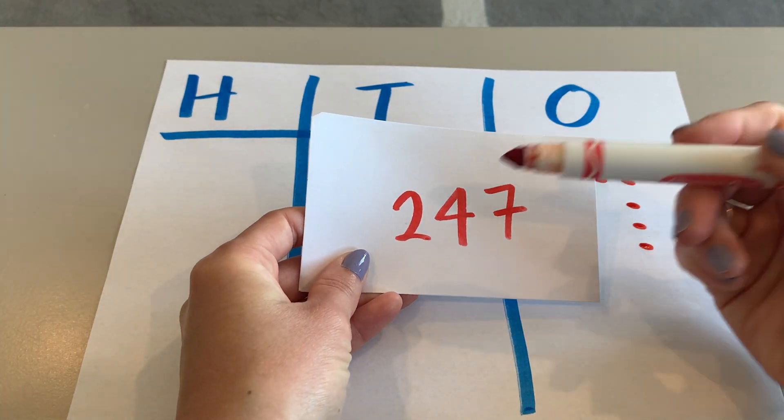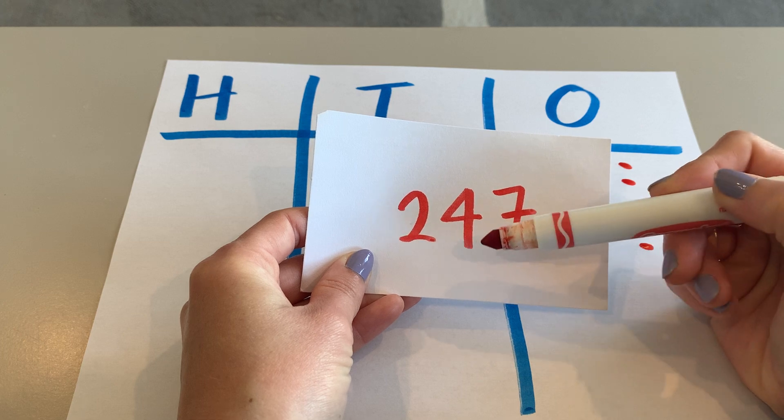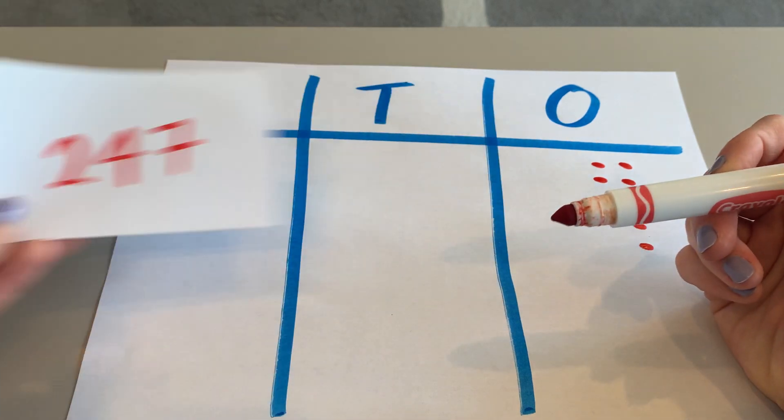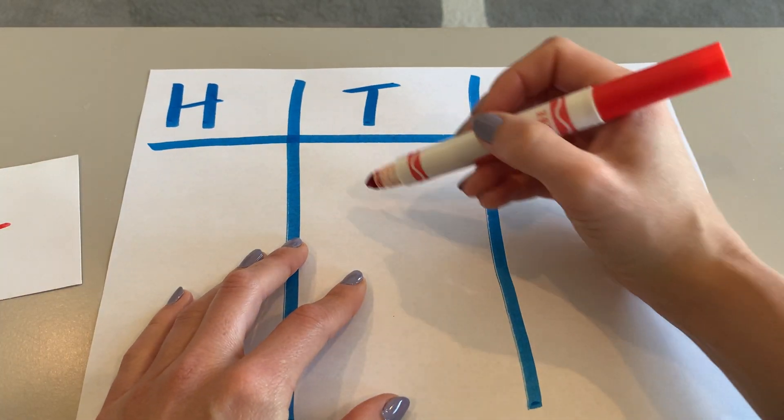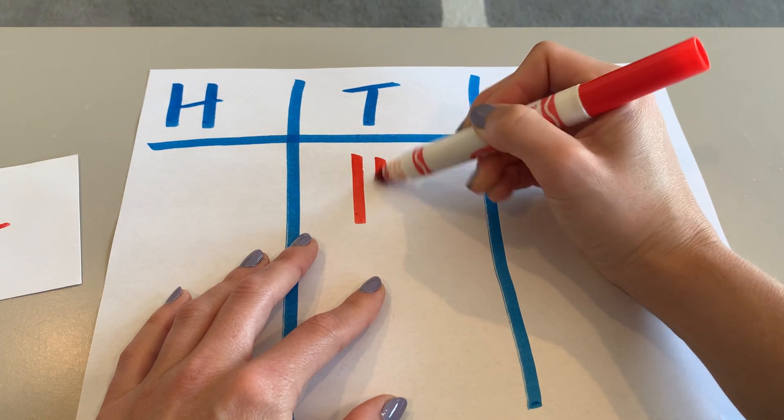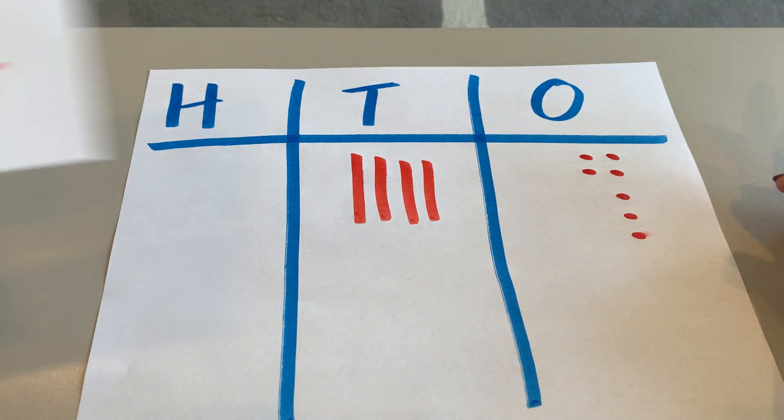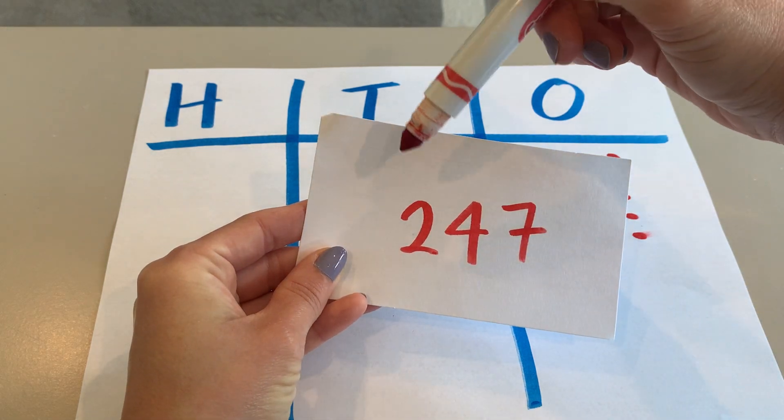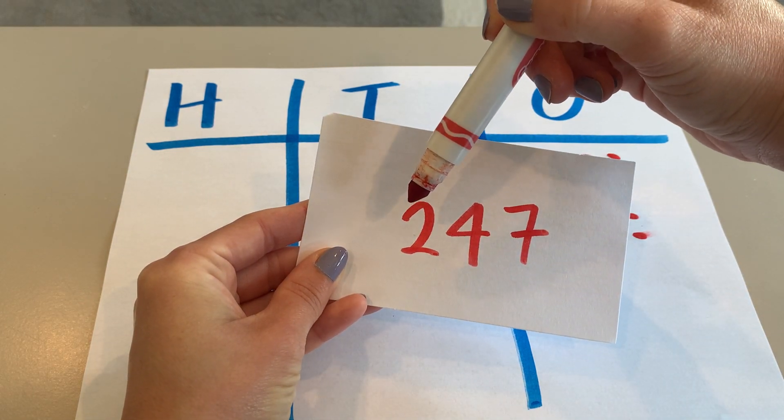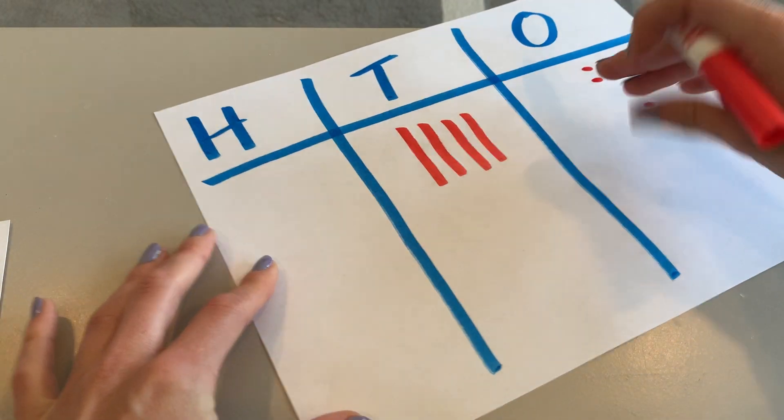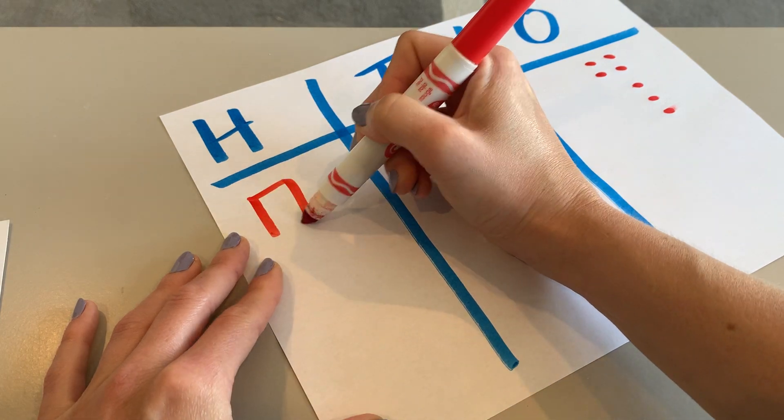The digit in the tens place is the four, so I'm going to draw four tens rods. One, two, three, four. The digit in the hundreds place is the two, so I'm going to draw two hundreds flats.